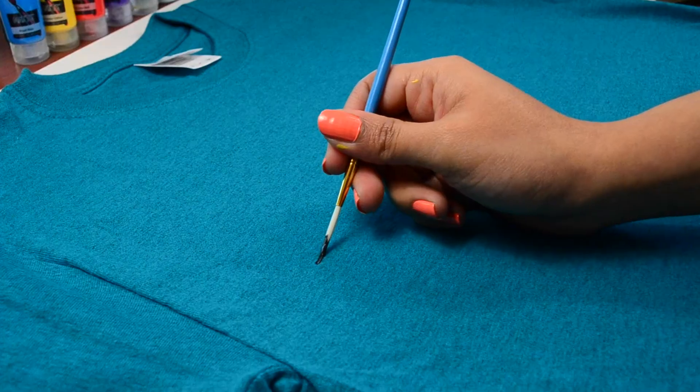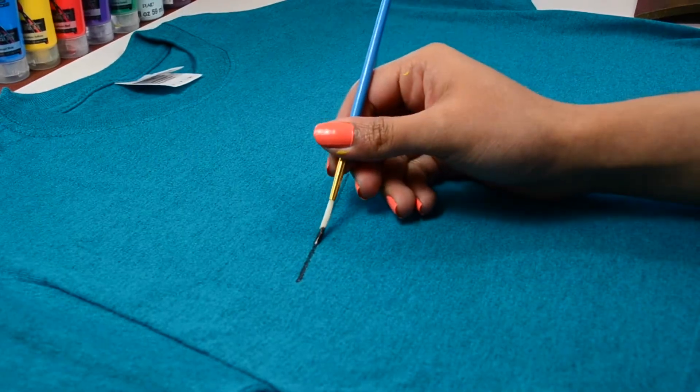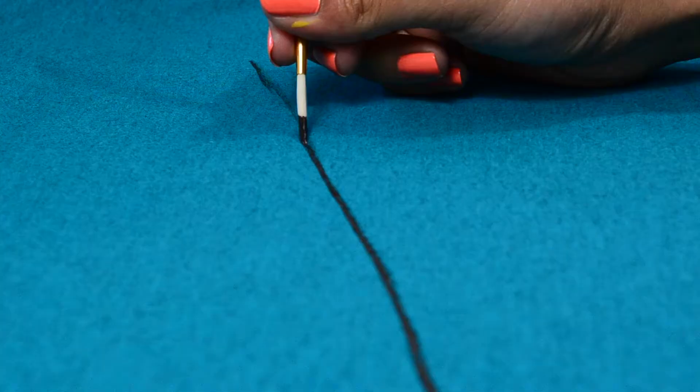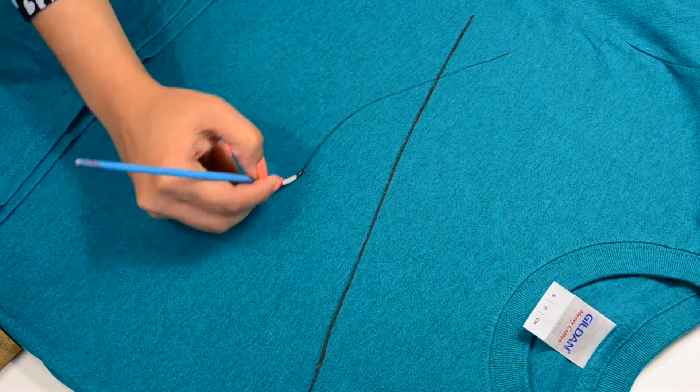Now, using a long thin paint brush and black paint, I am making a string like this and then giving it another coat of paint for making it darker. Adding another string here.